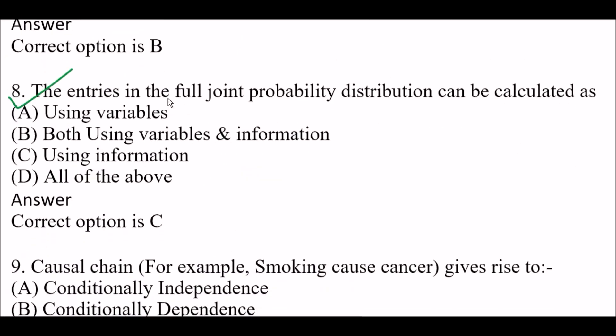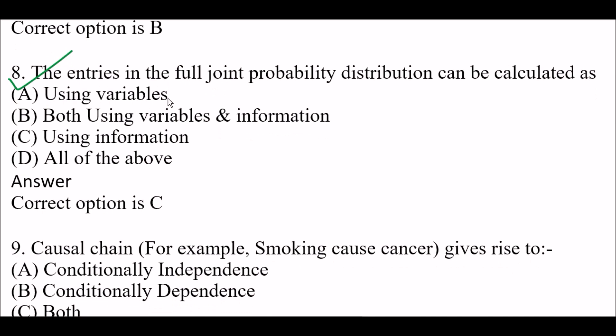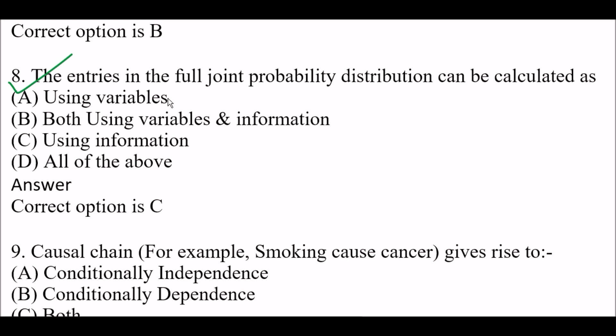Next question: The entries in the full joint probability distribution can be calculated as — Option A: Using variables, Option B: Both using variables and information, Option C: Using information, Option D: All of the above. Right answer is Option C — the entries in the full joint probability distribution can be calculated using information.